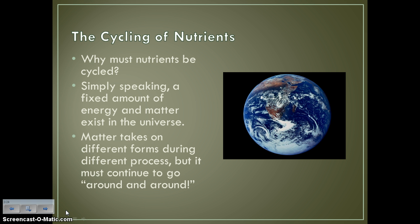Why do nutrients have to be cycled? Simply speaking, there is a fixed amount of energy and matter that exists in the universe. So when this energy and matter is getting used up, you have to be able to recycle it back into the environment in order to allow it to take on different forms during different processes so that it can continue to go around and around.